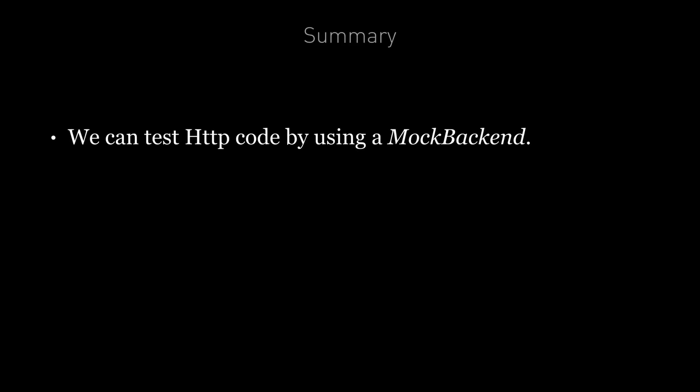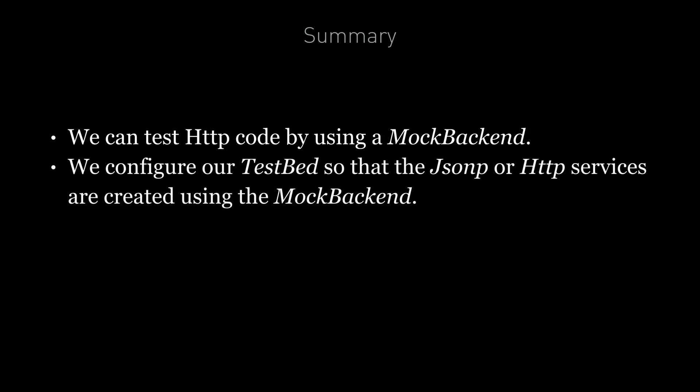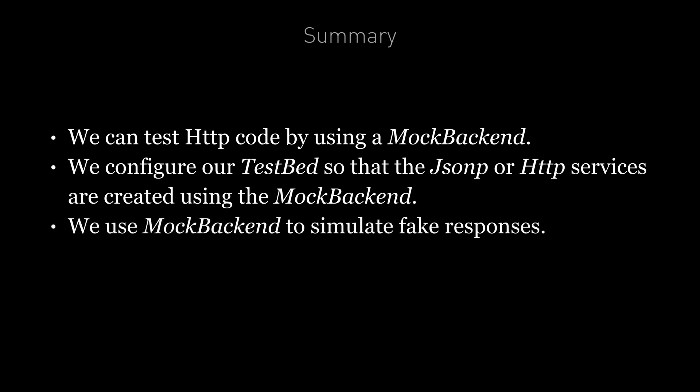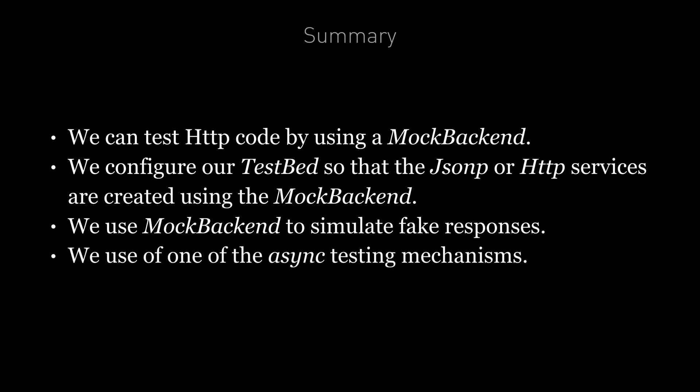To summarize: we can test code that makes HTTP requests by using a mock backend. This requires configuring our testbed so that the JSONP or HTTP services are created using the mock backend. We then grab a reference to the instance of mock backend that was injected into the JSONP or HTTP service and use it to simulate responses. Since HTTP is by nature asynchronous, we use one of the async testing mechanisms covered in previous lectures.